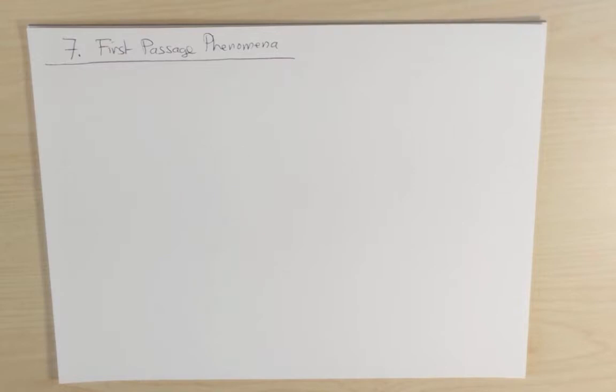Finally, let me turn to some first passage phenomena of random walks. So as the name suggests, first passage phenomena refers to asking the question, when does a random walker first reach a specified level? I'd like to illustrate the interesting first passage properties of a one dimensional random walk in the continuum limit.